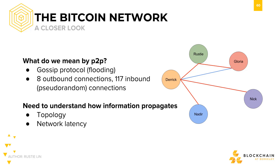The way you get connected and join the Bitcoin network in the first place is by a recursive procedure. Hard-coded into the Bitcoin core software is a list of seed peers that you connect to initially. You ask these seed nodes for their neighbors, pick some, ask these nodes for their neighbors, and repeat, until you think you have a fairly random set of connections.